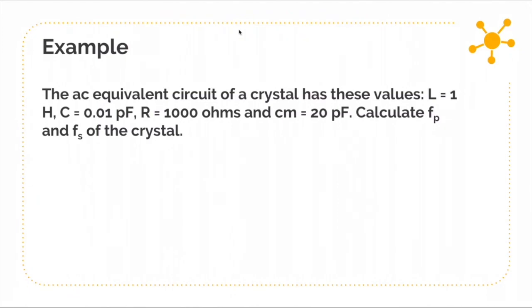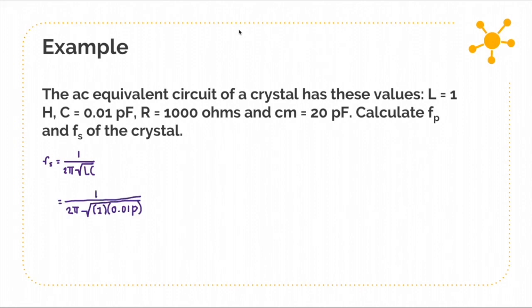Let's have an example. The AC equivalent circuit of a crystal has the following values: L = 1 henry, C = 0.01 picofarad, R = 1000 ohms, and the mounting capacitance Cm = 20 picofarad. We need to calculate fp and fs of the crystal. Starting with fs, which equals 1 over 2π times the square root of LC. Substituting the given values, we get fs = 1589 kilohertz.